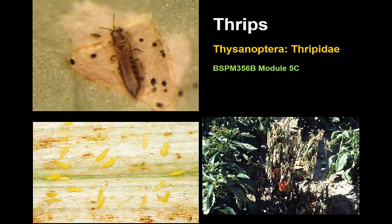So far we haven't discussed the thrips at all, yet the thrips are in many situations the most common insect found feeding on plants, including the kinds of plants we grow for fruits and vegetables, herbs. They are extremely common, abundant insects that are not observed in most situations because of their minute size.